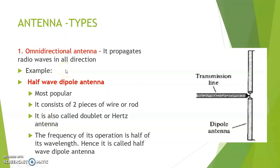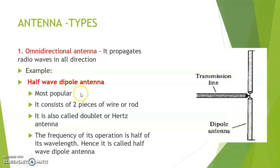There are different types of antenna based on the direction of propagation of radio waves. The first one is the omni-directional antenna, which can propagate radio waves in all directions — that is, it can propagate in 360 degrees. The main example is a half-wave dipole antenna, which is most popular and consists of two pieces of wire or rod. It is also called a doublet or Hertz antenna. The frequency of its operation is half of its wavelength, and hence it is called a half-wave dipole antenna.